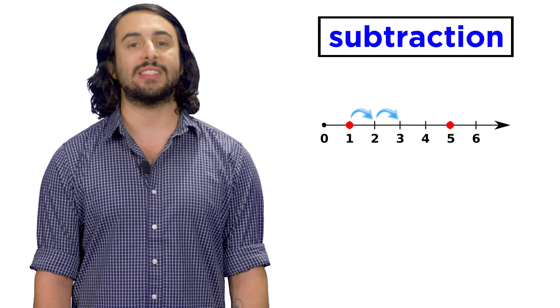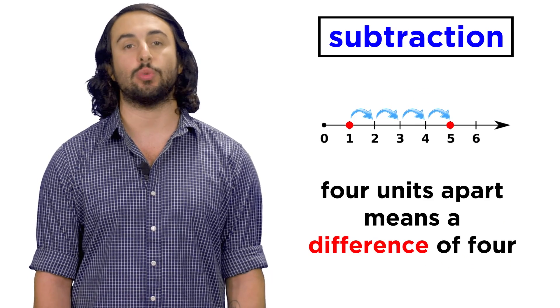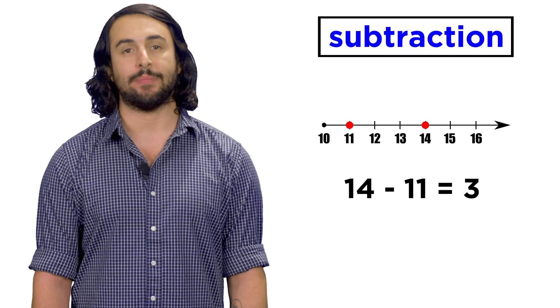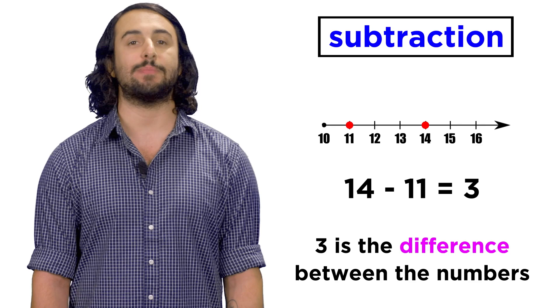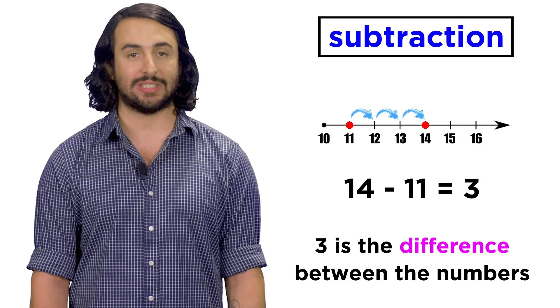On a number line, this is the distance between the two numbers, and this is an excellent way to visualize subtraction. Fourteen minus eleven is three, because three is the difference between the two numbers. It takes three to get from eleven to fourteen.